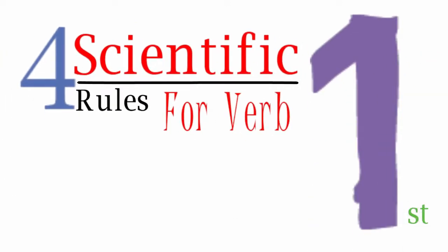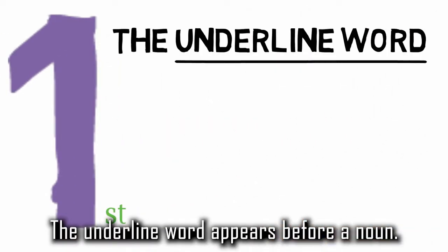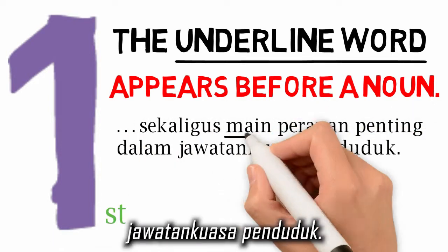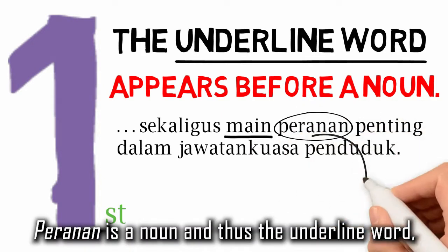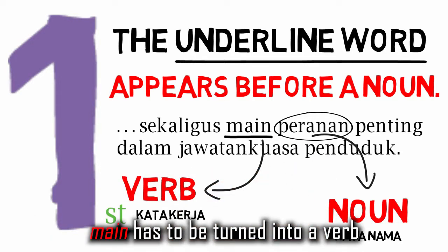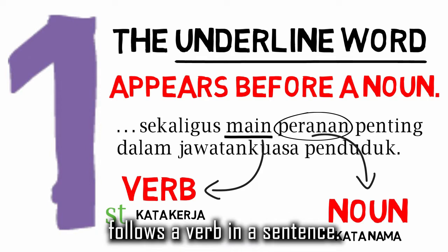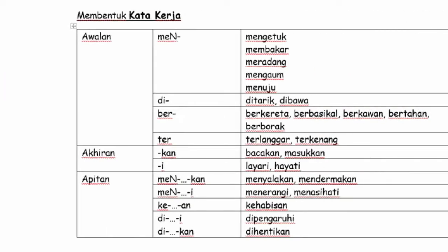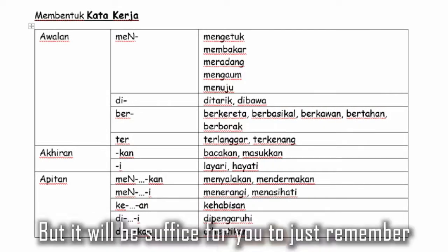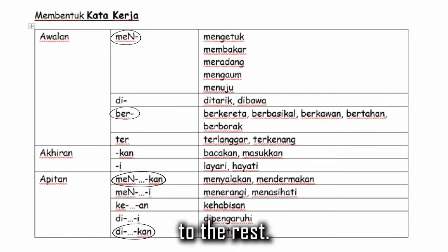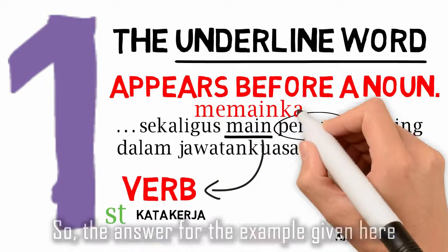The first rule: the underlined word appears before a noun. For example, 'sekaligus main peranan penting dalam jawatan kuasa penduduk.' Peranan is a noun, and thus the underlined word 'main' has to be turned into a verb, as a noun in most instances follows a verb in a sentence. Now that you know the answer is a verb, what impohan is required for a verb? This is the list of impohan for verbs, but it will suffice to just remember this as they are used most predominantly in an impohan exercise. So the answer for the example given here is memainkan.